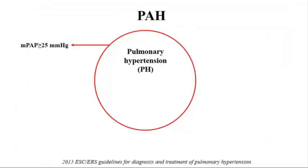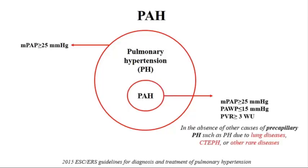For PAH specifically, you look at mean pulmonary artery pressure, but also other criteria including wedge pressure—it has to be low—and pulmonary vascular resistance must be high, ruling out other causes of pre-capillary pulmonary hypertension such as CTEPH and significant lung disease.